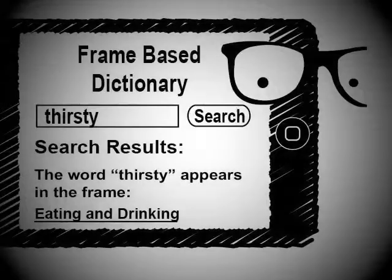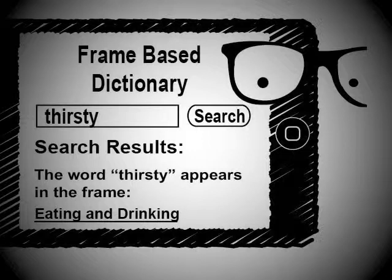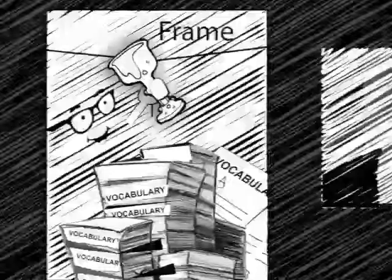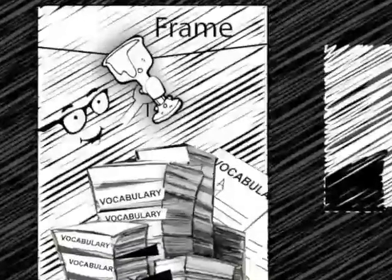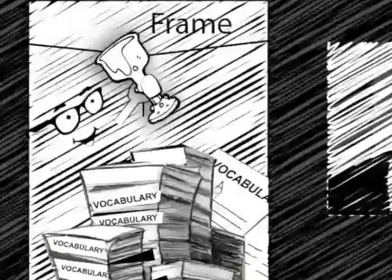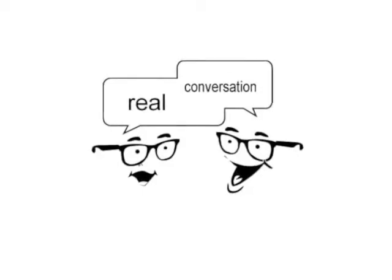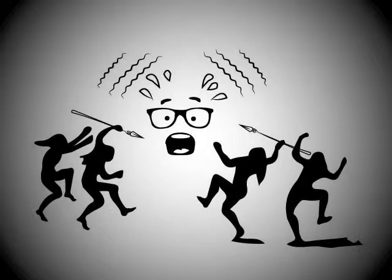So let's go back to that critical moment that can save your future and the future of your people. Using an online frame-based dictionary, you look up the word thirsty and find the translation that belongs in the eating and drinking frame. And you're finally on the right track. Now you see how learning vocabulary words within a given frame shows the whole picture, aids in real-life language use, and can be a matter of life and death.